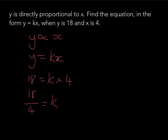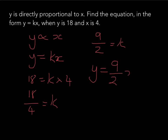We have a fraction that will simplify. 18 divided by 4 — I can divide both by 2, giving 9 over 2 equals k. At this step I could stop since the fraction doesn't simplify further, or do the division to get 4.5. However, I recommend leaving your answer as an improper fraction. So the equation is y equals nine-halves times x.